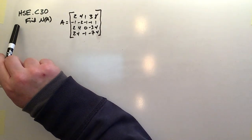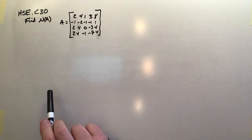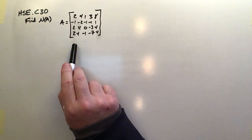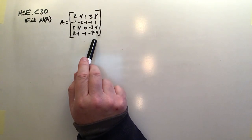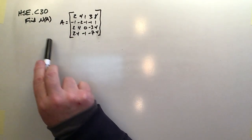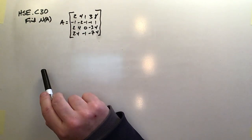This is HSE30, again, homogeneous systems of equations. In this case we want to find the null set of a matrix. Recall that a null set is basically the solution if the matrix represents the coefficient matrix for a homogeneous system.